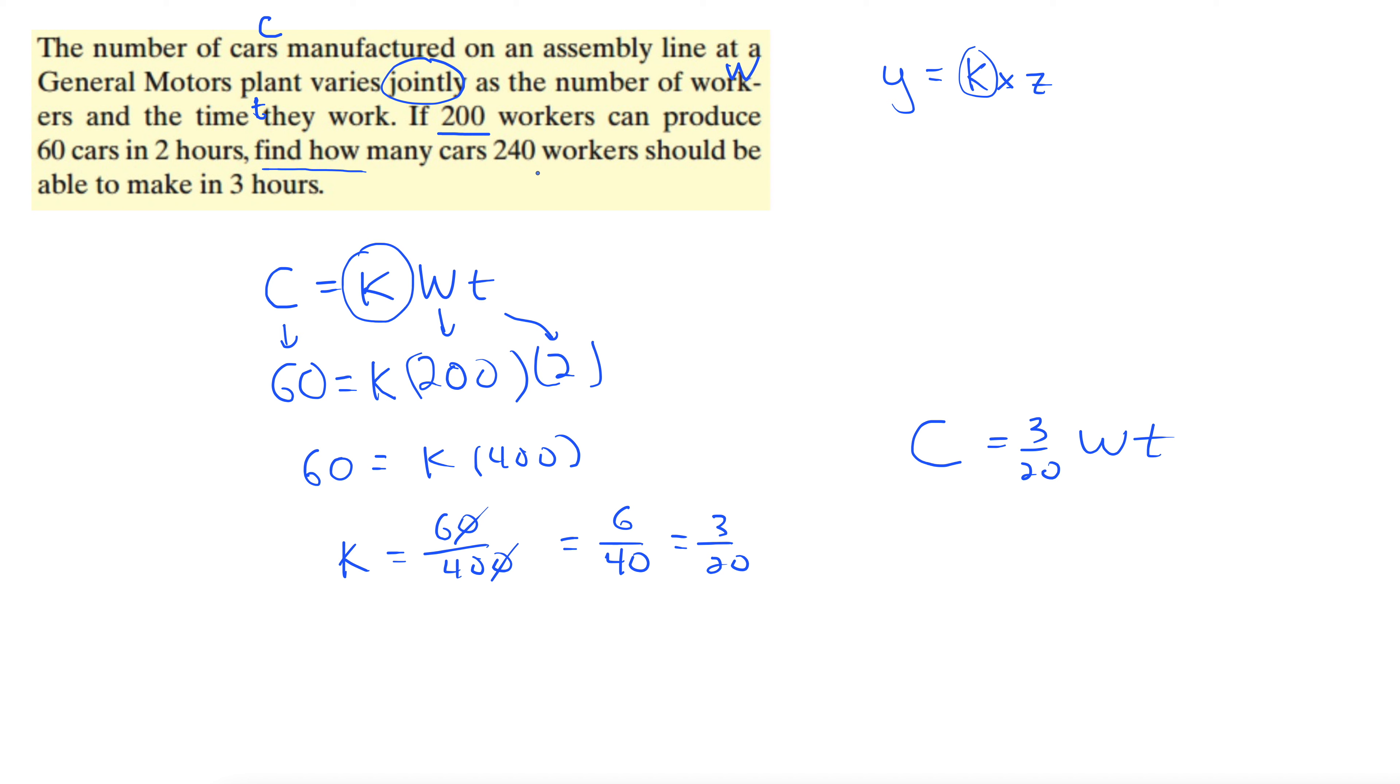Now it's saying find how many cars 240 workers... So now we're trying to find how many cars. The constant is still 3/20ths, 240 workers should be able to make in three hours, so time is three in this case.